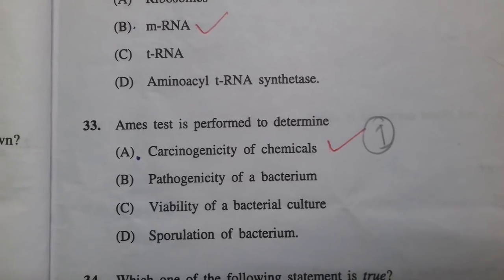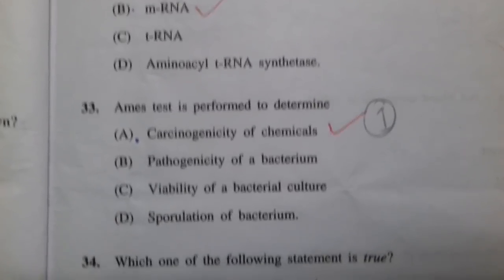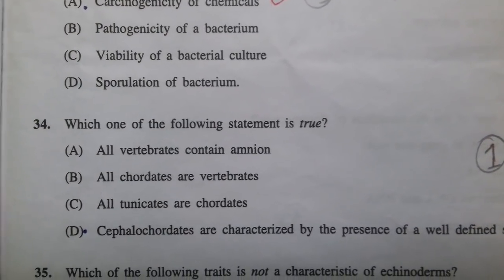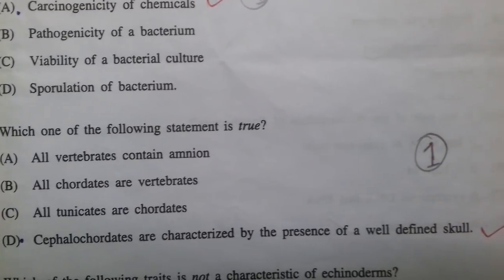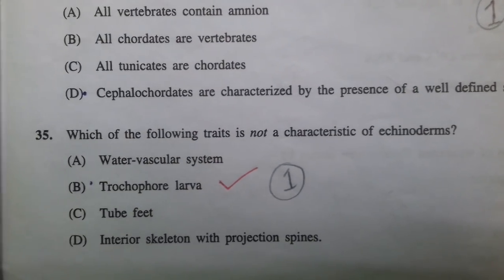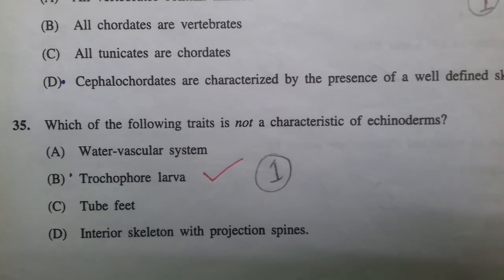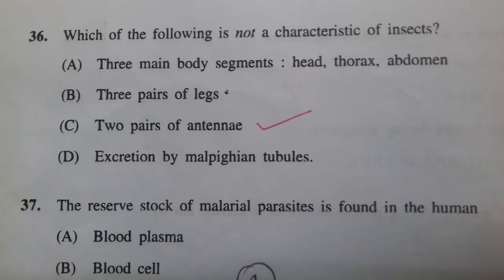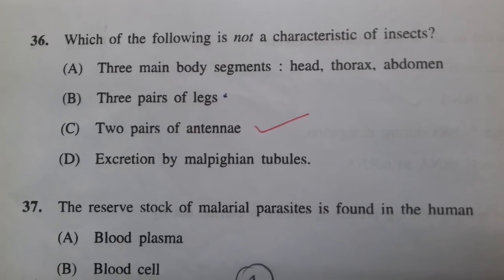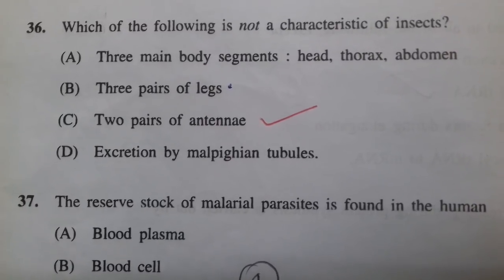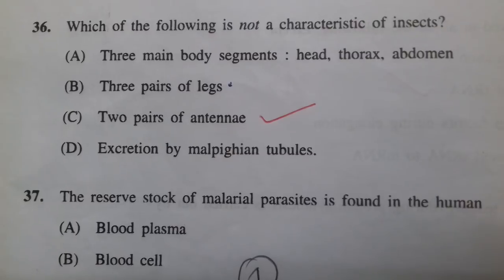The Ames test is performed to determine the carcinogenicity of chemicals. Among the statements given, cephalochordates are characterized by the presence of a well-defined skull — this was the correct option. Trochophore larva is not a characteristic of echinoderms. Insects have one pair of antennae, not two pairs — option C was the correct answer.